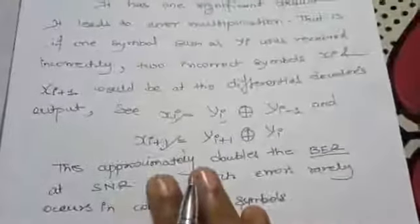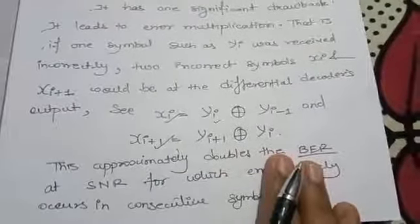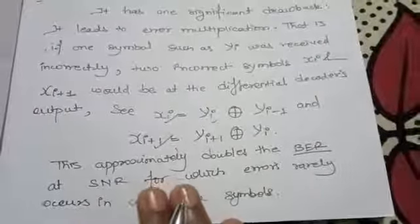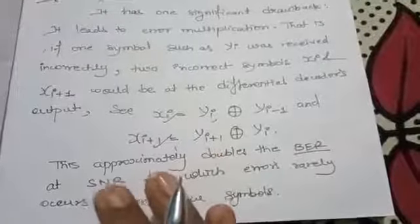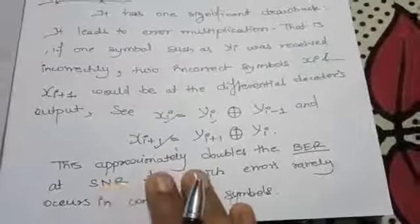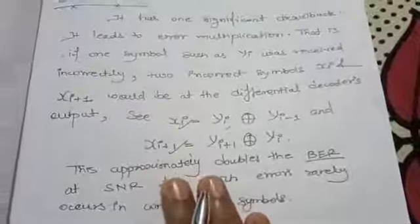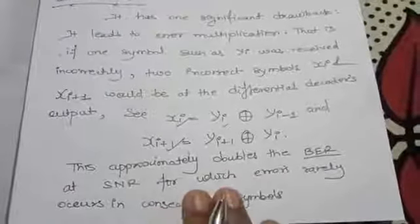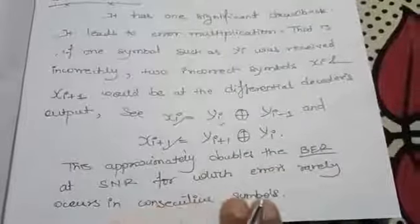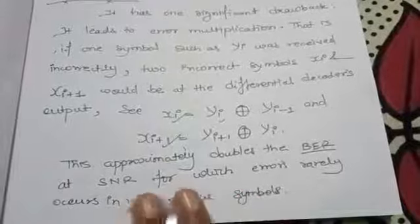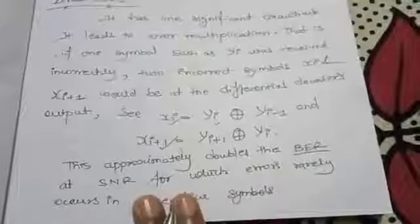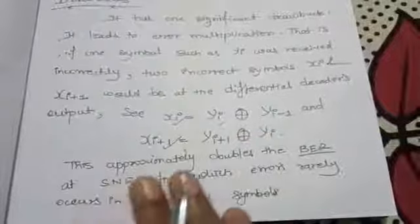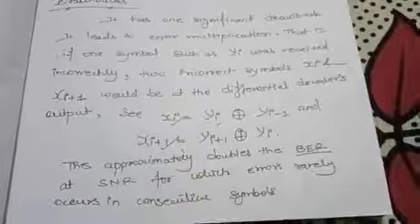Because of this, our bit error rate (BER) doubles, and the signal-to-noise ratio increases, meaning we get more higher frequencies, which reduces voice and audio clarity. However, these errors rarely occur in consecutive symbols — they appear in continuously floating signals, such as analog signals.